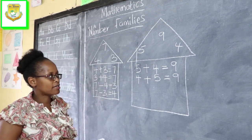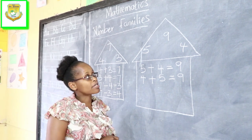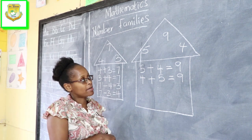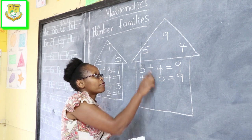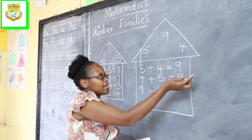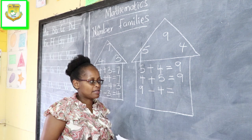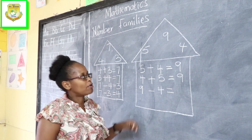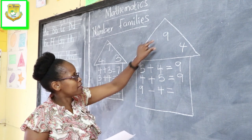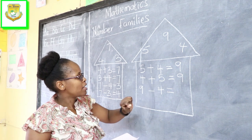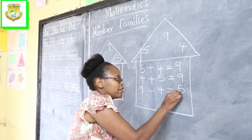Now we are done with addition, so let's move to the take away. For take away, we start with the bigger number among the three numbers we initially had. So we have 9 take away — either we start with 5 or 4. For instance, let's start with 4: 9 take away 4. We don't need to calculate to find the answer. We find out from our three numbers which one is not represented. 9 is represented, 4 is represented, and what is missing is definitely 5. So 5 is the answer.